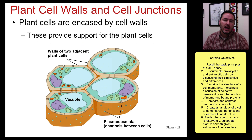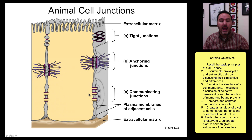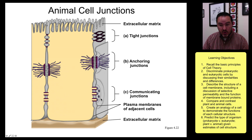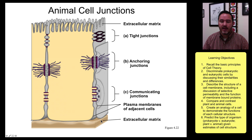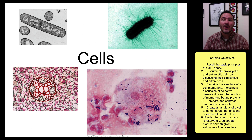Plants can also have cell walls that provide support, and they can have channels between cells called plasmodesmata. Animal cells have similar things called cell junctions — these include tight junctions, anchoring junctions, and communicating junctions — and this is all overlaid on the extracellular matrix. And that's just a quick review of cells.